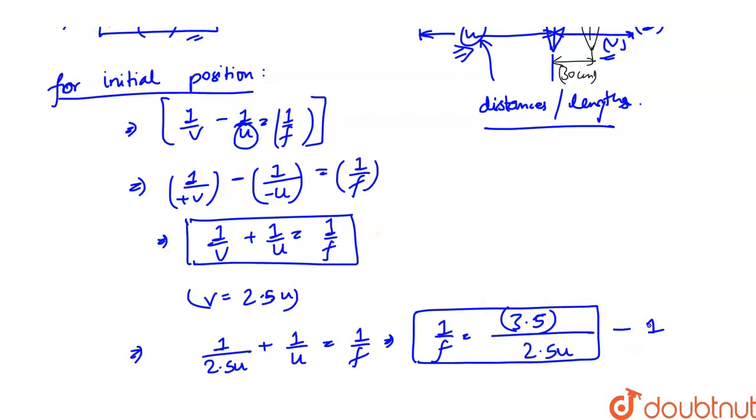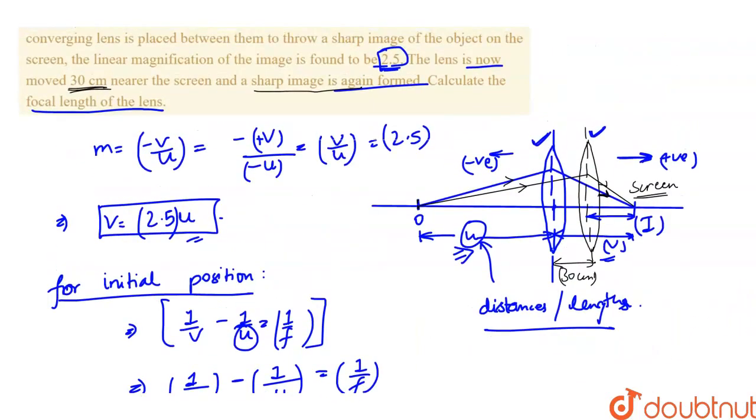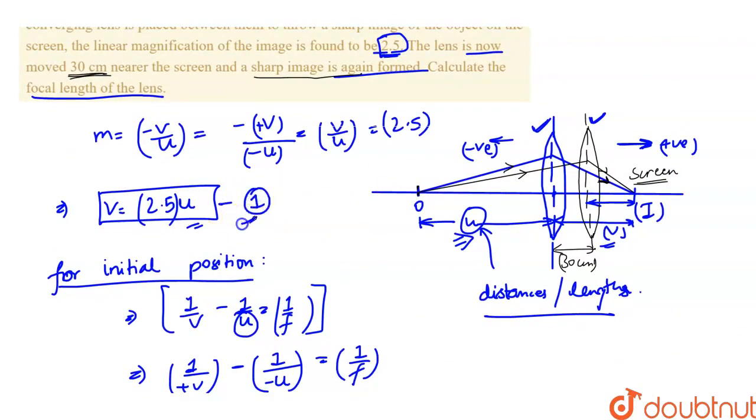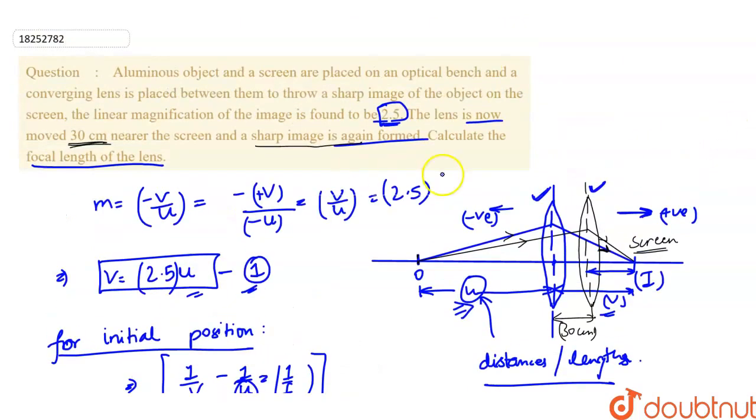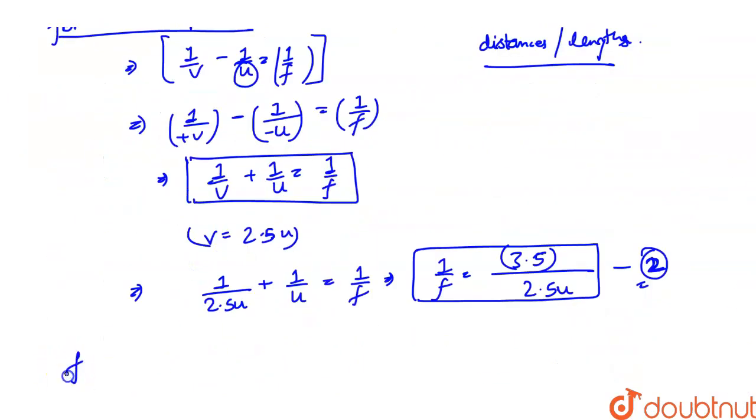This is equation number 2. This is one equation. Now equation 2 will come from the shifted position when we use the lens at the new position for final shifting.